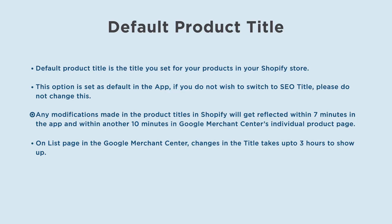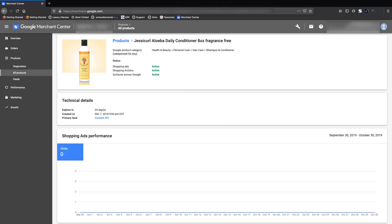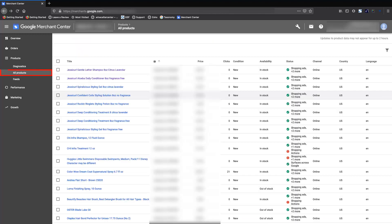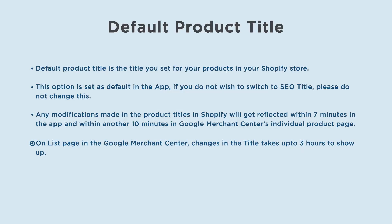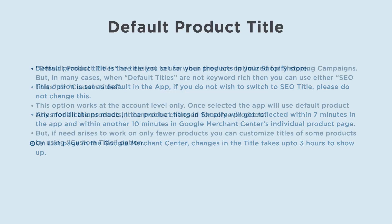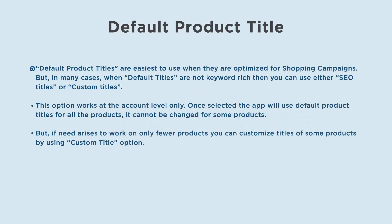Changes get reflected within seven minutes in the app, and within another 10 minutes in Google Merchant Center's individual product page. On the list page in Google Merchant Center, changes in the title take up to three hours to show up.